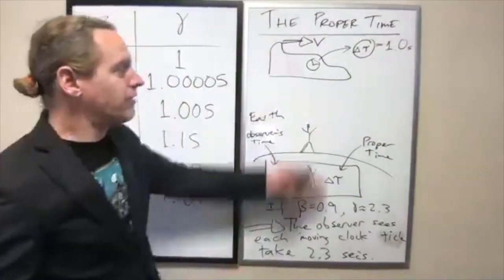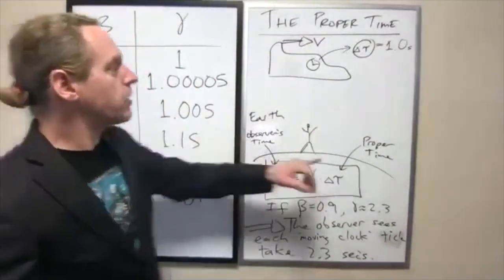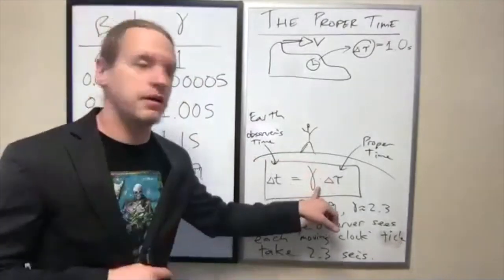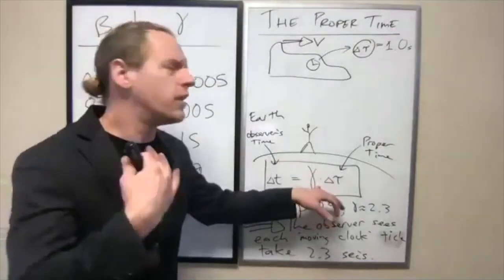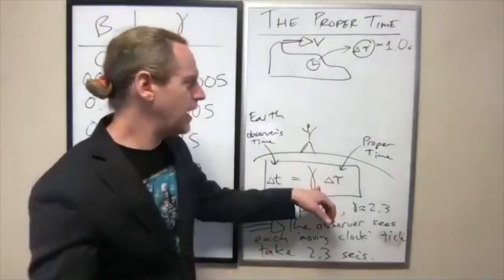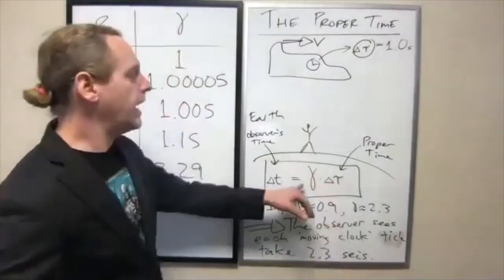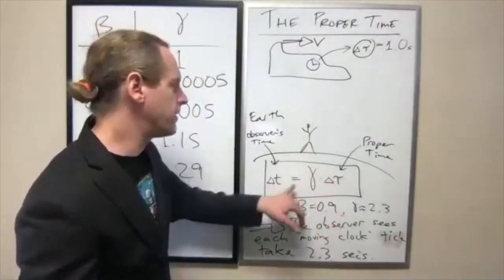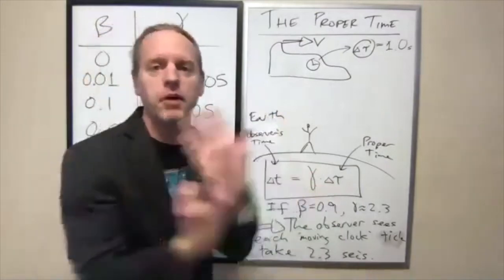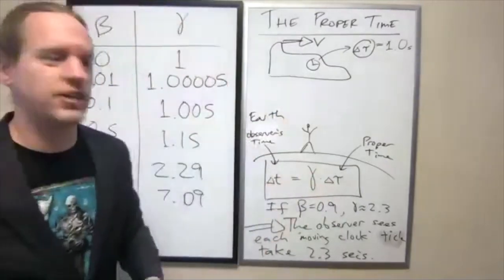And so the whole point of going through this here is that no matter what value of gamma you plug in, remember the only, the trivial case is beta zero. And so the only time we're going to have these two match is when there is no relative motion. And again, that's a dumb case to consider.